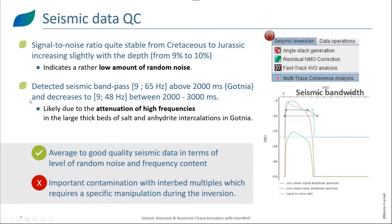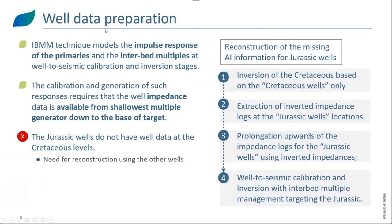The second type of QC is the QC and preparation of well data. The IBMM technique is going to model the impulse response of the primaries and interbed multiples at two stages: first at the well-to-seismic calibration, and then in the inversion stage. The calibration requires that the well impedance data is available from the shallowest multiple generator down to the base of the target. In our study, however, the Jurassic wells do not have well data at the Cretaceous levels. This is why we had to reconstruct this information using the other wells — the reconstruction of the missing impedance information for these Jurassic wells.